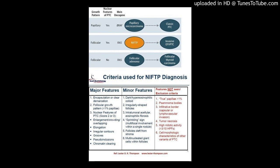Gross description: well-circumscribed encapsulated solid nodules. Microscopic/histologic description: nuclear features of papillary thyroid carcinoma are present. Each category is assigned a score of 0 or 1, resulting in an overall score between 0 to 3, where a total of 0 to 1 is not diagnostic of NIFTP and 2 to 3 is diagnostic of NIFTP.